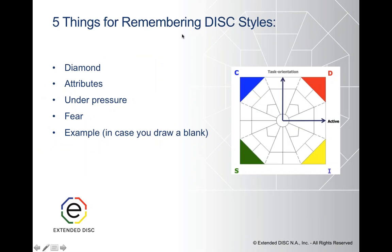Before we get into the D, I, S, and C, the tip I usually give to participants is: remember five things about each DISC style. First, where does it fall on the model — on the diamond? For example, the D falls in the top half, meaning they're task-oriented, and they fall to the right side — they're active. Next is attributes: what words would you use to describe this style? What happens to the style under pressure? What is the biggest fear for this style? And put a visual example in your head about the style.